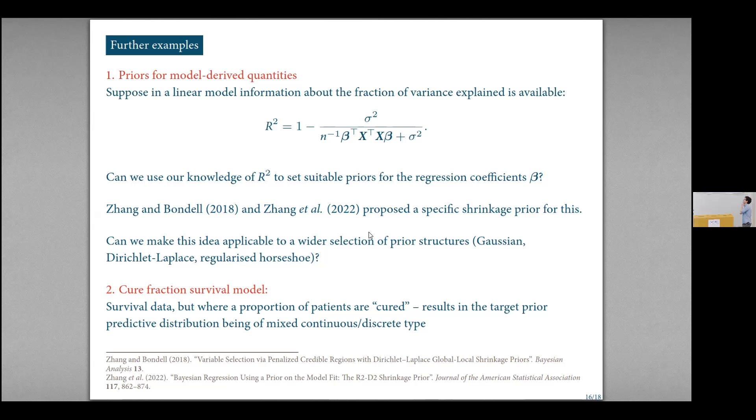So that's one simple example. We thought about two other examples in the paper. One was rather than specifying a prior for an observable, specified for model derived quantities specifically for R squared. People thought about this in the context of specific shrinkage priors, but it would be nice to be able to make this applicable to more priors. And we also thought about this cure mixture fractional survival model, which I will point to details of. The key thing about this is it's a mixed distribution, and so that's why we ended up with CDFs rather than PDFs.